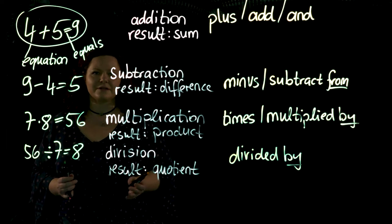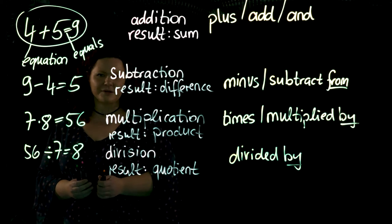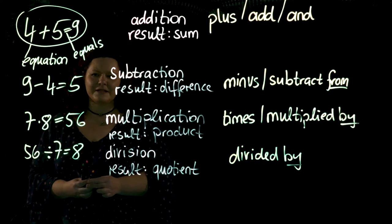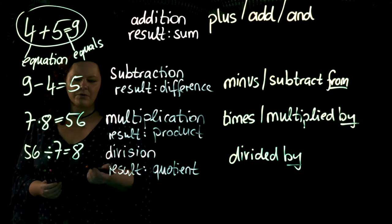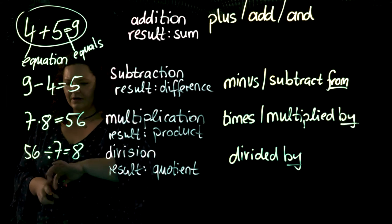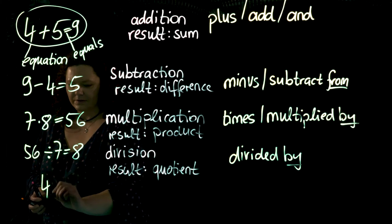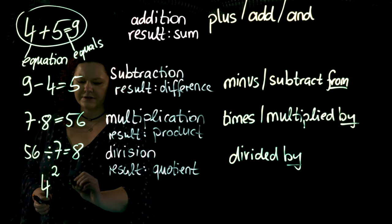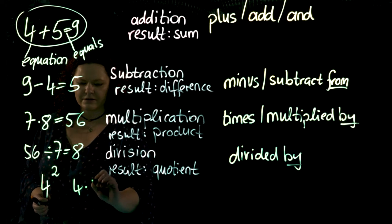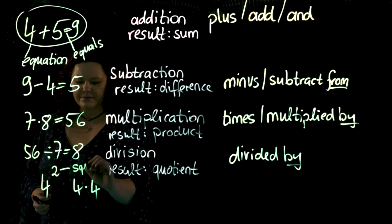These are the basic words you need to understand any complex and difficult mathematical operation. These are the major things. Some more words now. First, we need to know what this is called: four squared is the same operation as four times four. We call this squared.